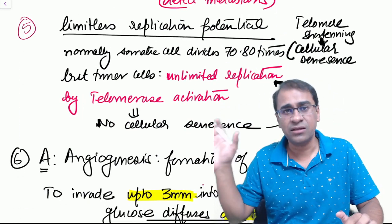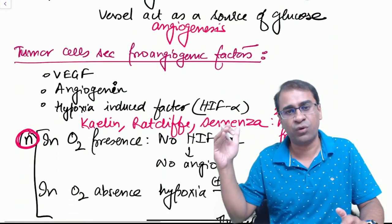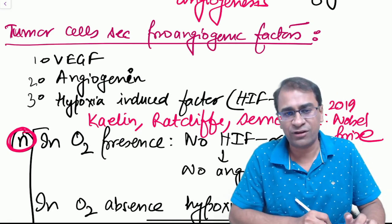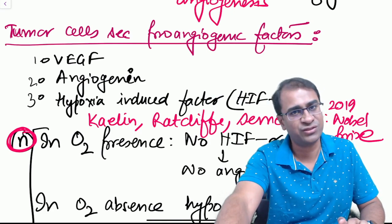Then comes angiogenesis. What you need to know is there are three pro-angiogenic factors like VEGF, angiogenin, and the hypoxia-induced factor is very important here.